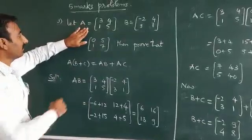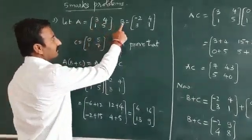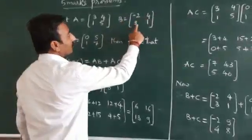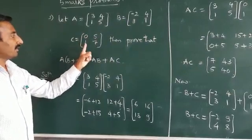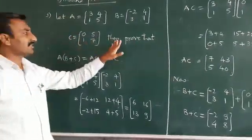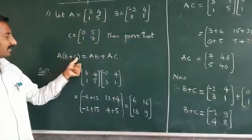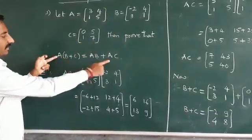Let matrix A be [3, 4; 1, 5], B be [-2, 4; 3, 1], and C be [0, 5; 1, 7]. They will give 3 different matrices and ask you to prove that A(B+C) = AB + AC.